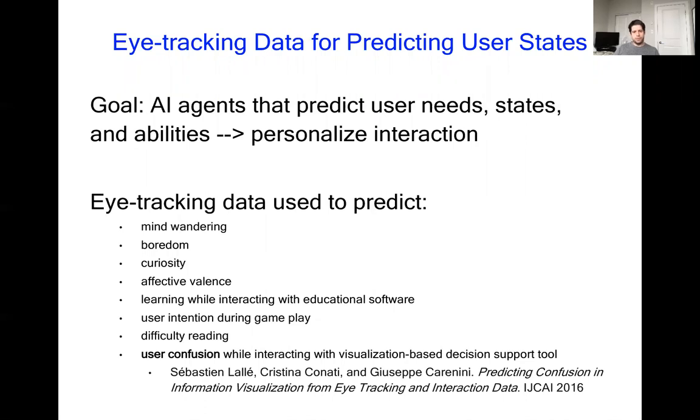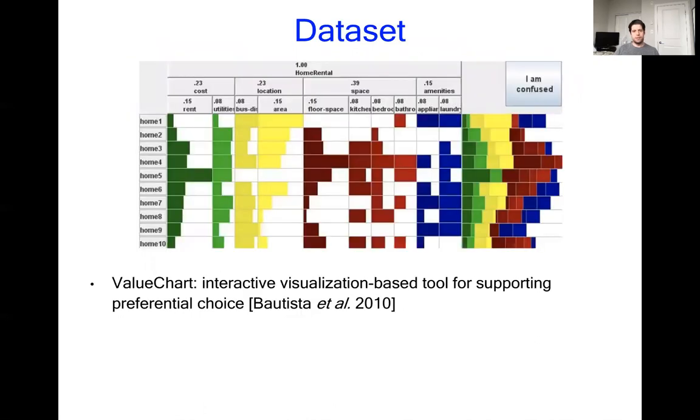We build on the results of Laleh from HCI 2016 where they predicted confusion from eye tracking data by using classical machine learning methods. What we do in this paper is show that by using deep learning methods we can create state-of-the-art results over the same data set. Before talking about our method, I'm just going to briefly cover the data set used.